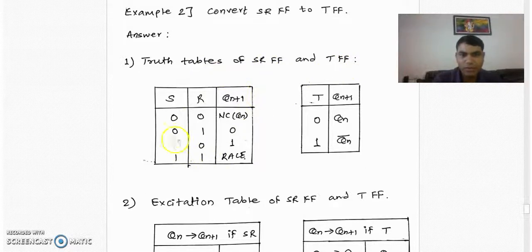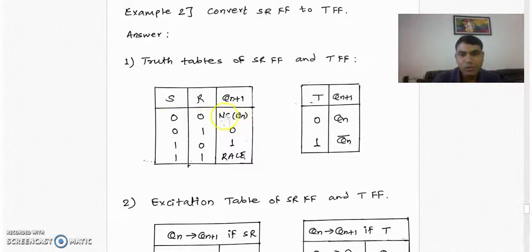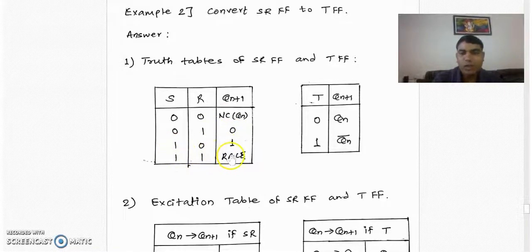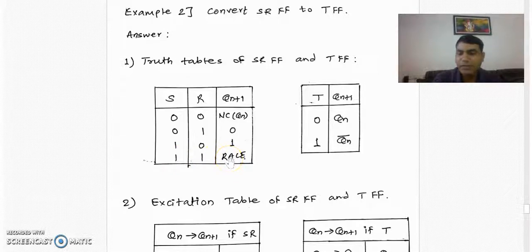This is the truth table for SR flip-flop. When SR is 0-0, the next state output is Qn as it is — there is no change. When SR is 0-1, the output is 0. When SR is 1-0, the output is 1. When SR is 1-1, the output is invalid — there is no output obtained for this state. We represent this invalid state by a cross in truth tables or K-maps.